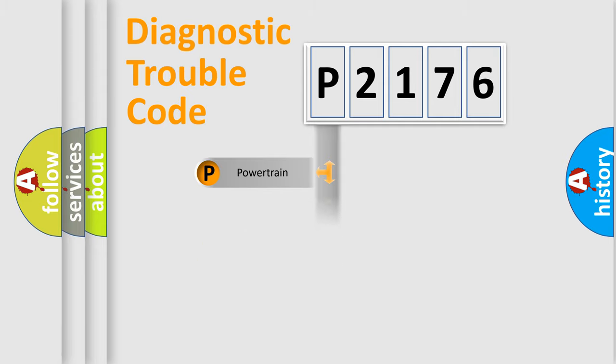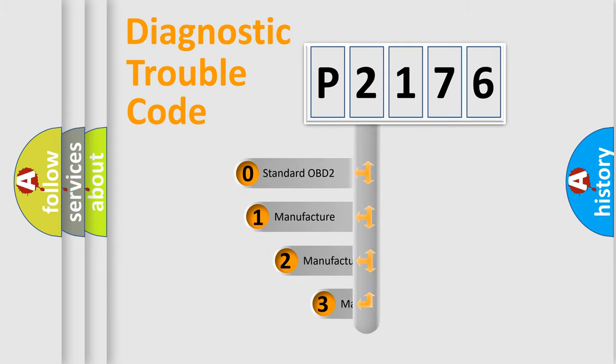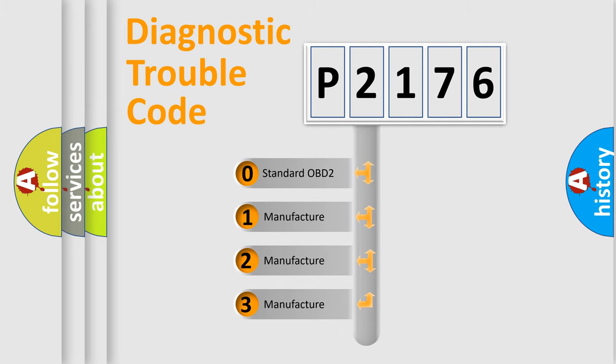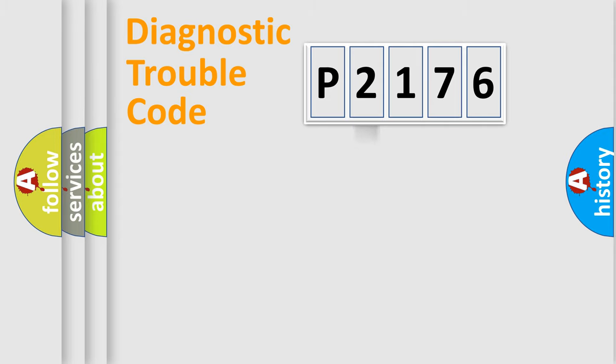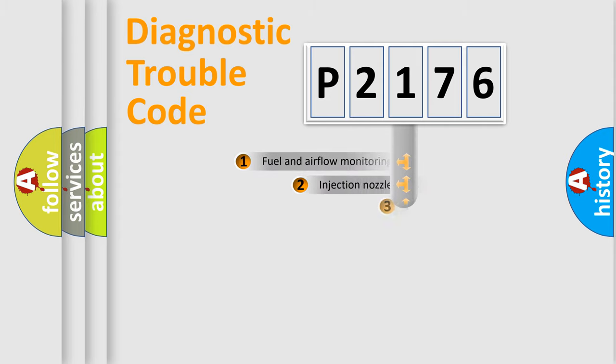Powertrain, Body, Chassis, and Network. This distribution is defined in the first character code. If the second character is expressed as zero, it is a standardized error. In the case of numbers 1, 2, 3, it is a more specific expression of the car-specific error.